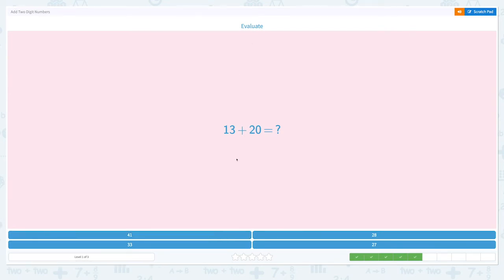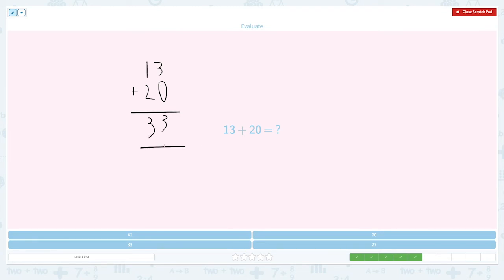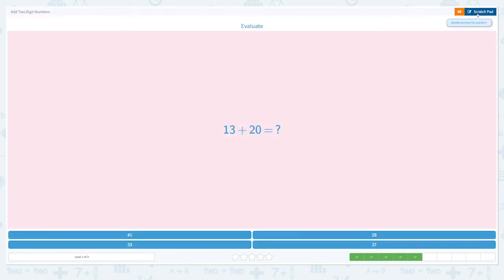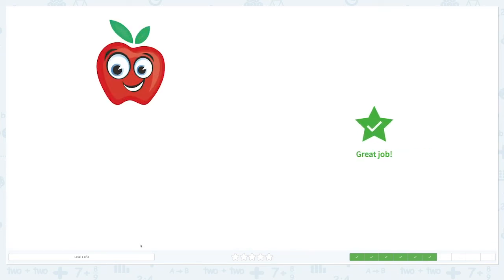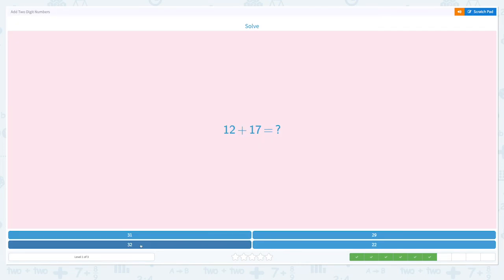Evaluate: 13 plus 20. Let's see. 13 plus 20. Now this time I'm just using the standard form. 3 plus 0 equals 3. And let's add the tens place. 1 plus 2 equals 3. So the answer is 33. Close the scratch pad and click. Great job. We're almost there.